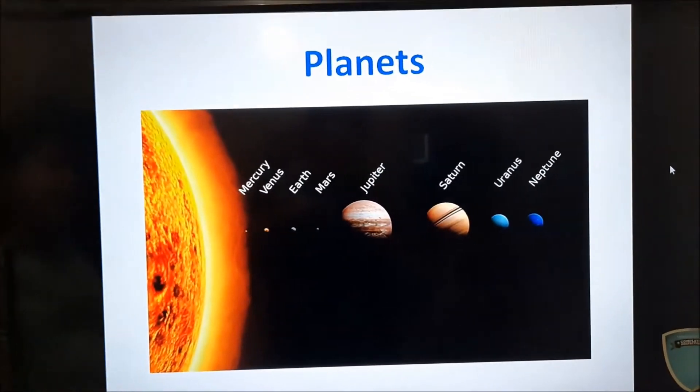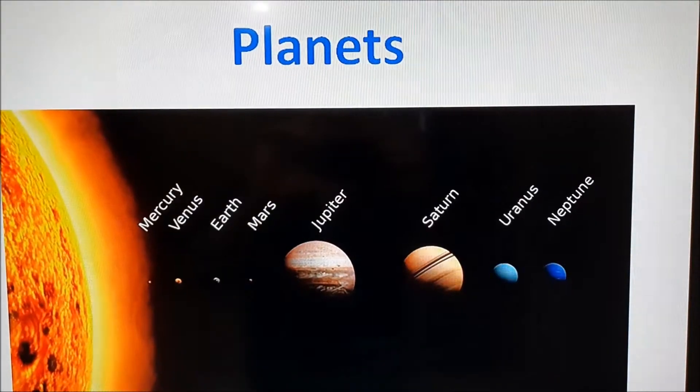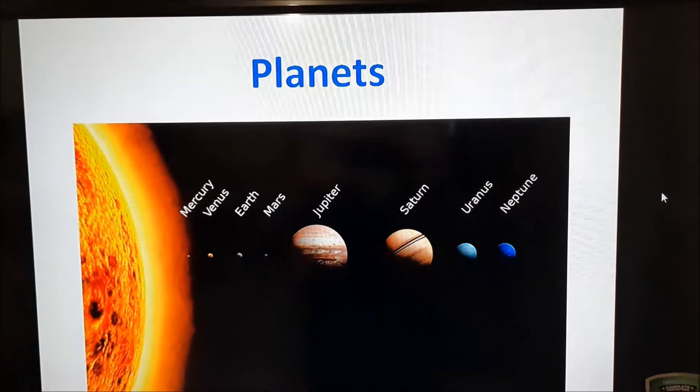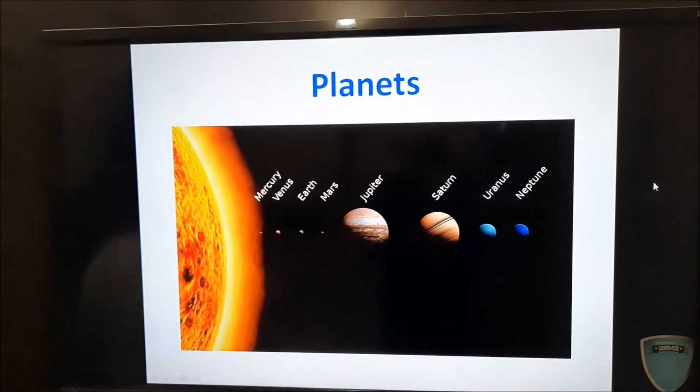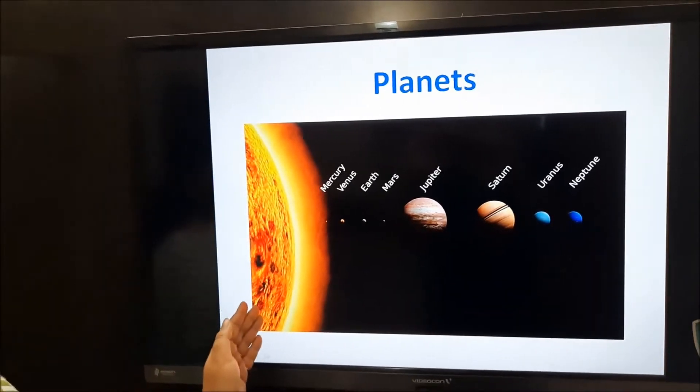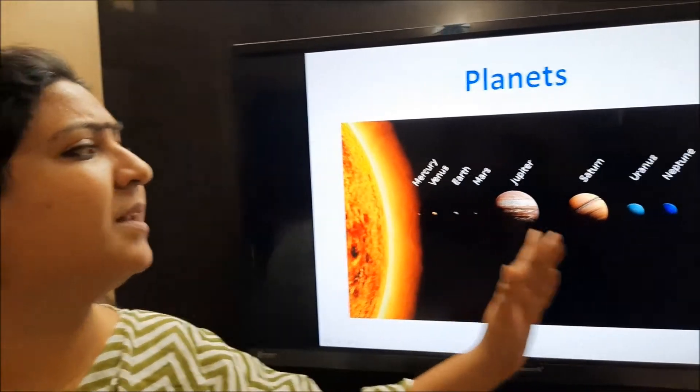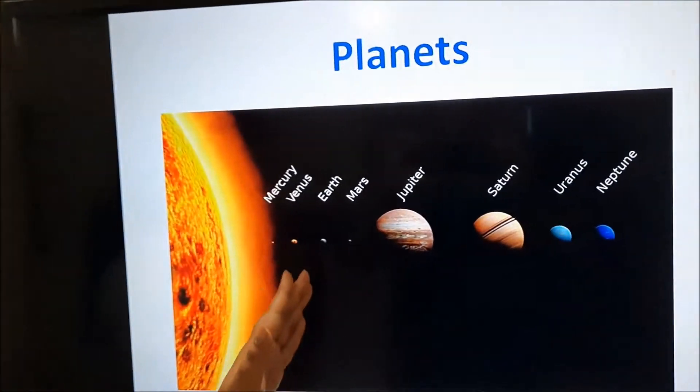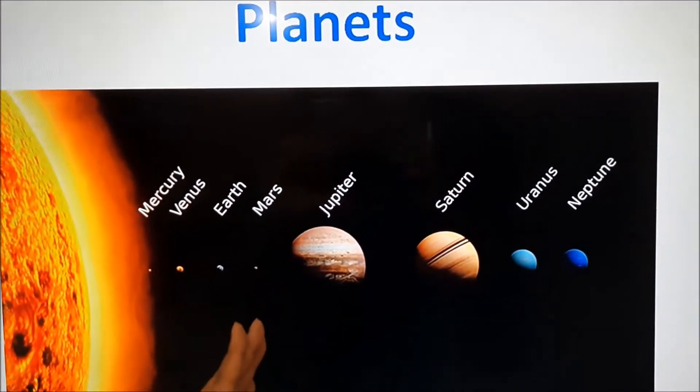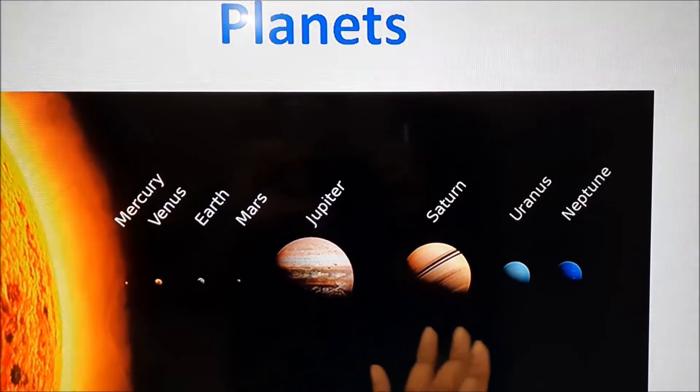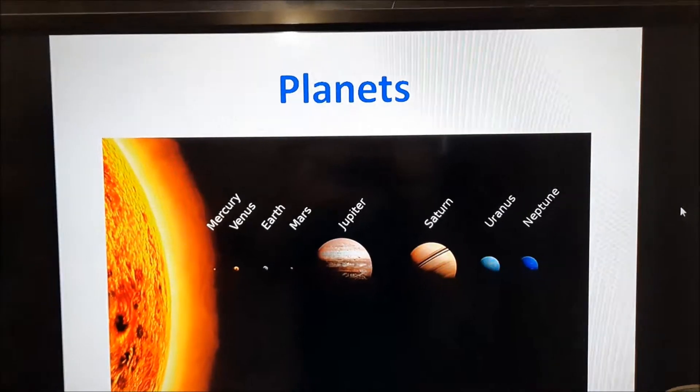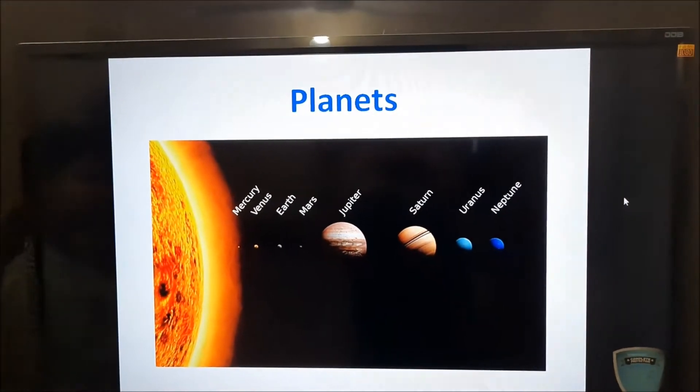Now planets. What are planets? Planets are large round objects in space which move around the sun or a star. Now if you look at this here, so there are eight planets in our solar system. Mercury comes first, Venus, then Earth, Mars, Jupiter, Saturn, Uranus and Neptune. So these are the eight planets in our solar system.